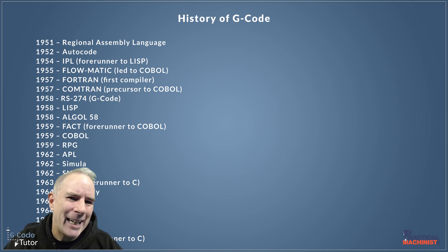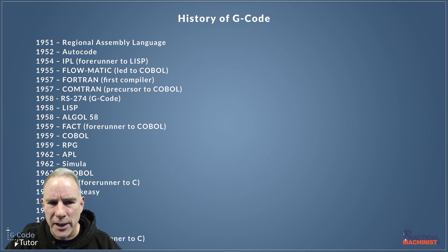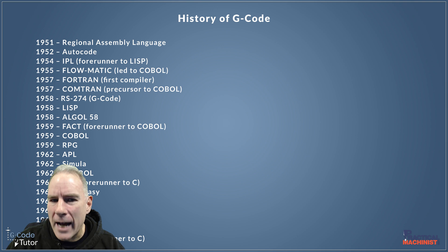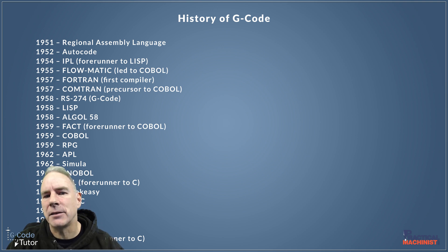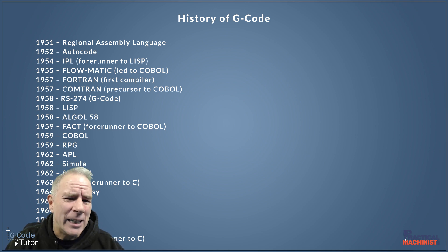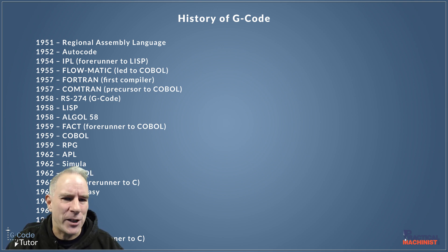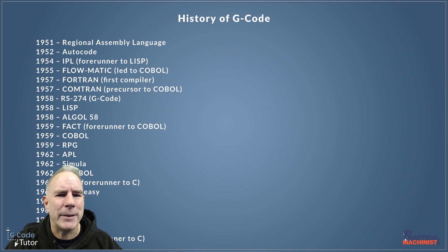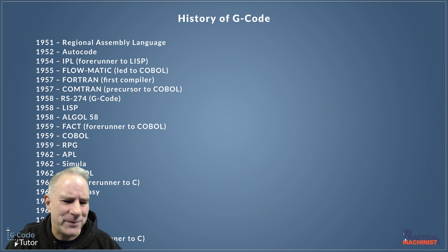Just two more down we can see that G-Code was invented in 1958. Now we know MIT was using G-Code before that, but this is the first official release. So we're still using this programming language, and it was one of the first high-level programming languages ever invented.